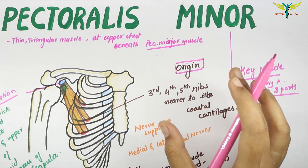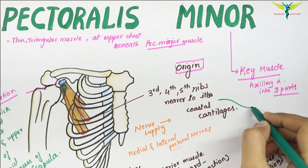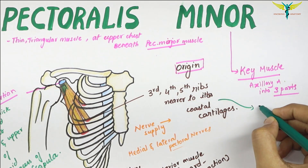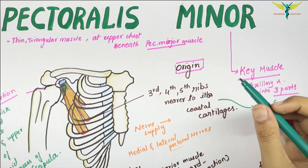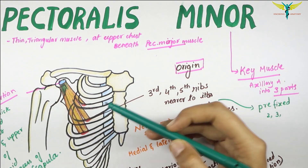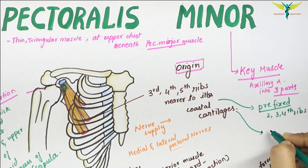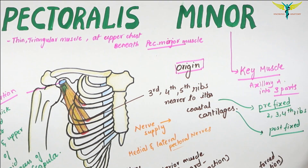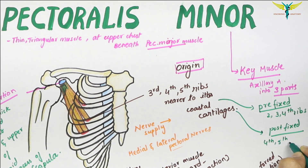Sometimes the origin of the pectoralis minor is variable. It can be prefixed, meaning it arises from the second, third, and fourth ribs, or it can be post-fixed, meaning it arises from the fourth, fifth, and sixth ribs.